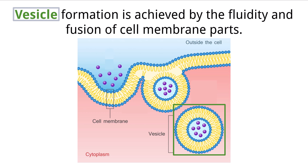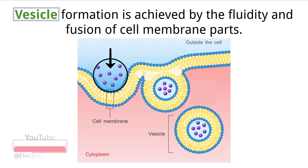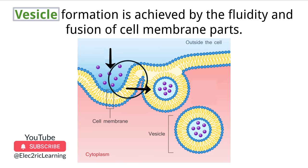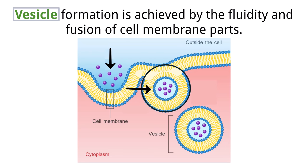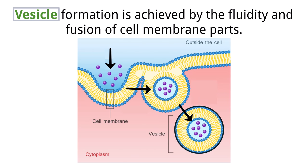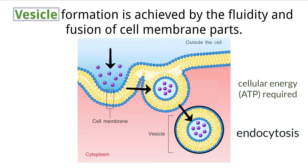Vesicles are structures made out of cell membrane components that can therefore easily fuse with the cell membrane when needed. If a cell needs to take in a pocket of liquid from outside of the cell, certain proteins can be triggered to start the process of pinching a piece of cell membrane off that contains that extracellular fluid, creating an internal vesicle that can be moved around the cell. This process requires cellular energy in the form of ATP to complete. Because the cell is bringing outside components in, we call this process endocytosis.